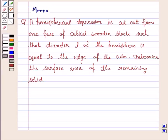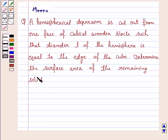Hello and welcome to the session. Let's discuss the following question: a hemispherical depression is cut out from one face of a cubical wooden block such that the diameter L of the hemisphere is equal to the edge of the cube. Determine the surface area of the remaining solid. Let's now move on to the solution.